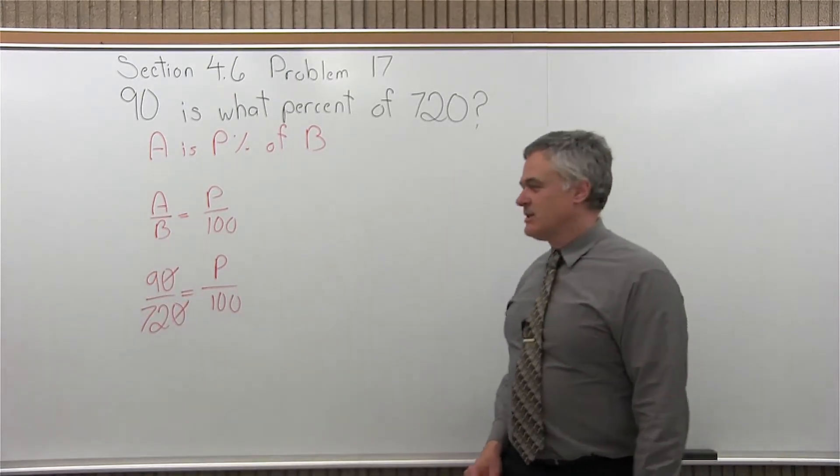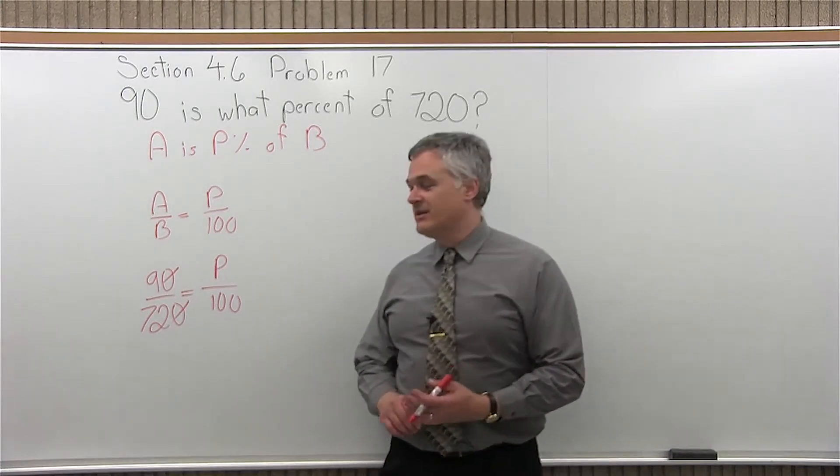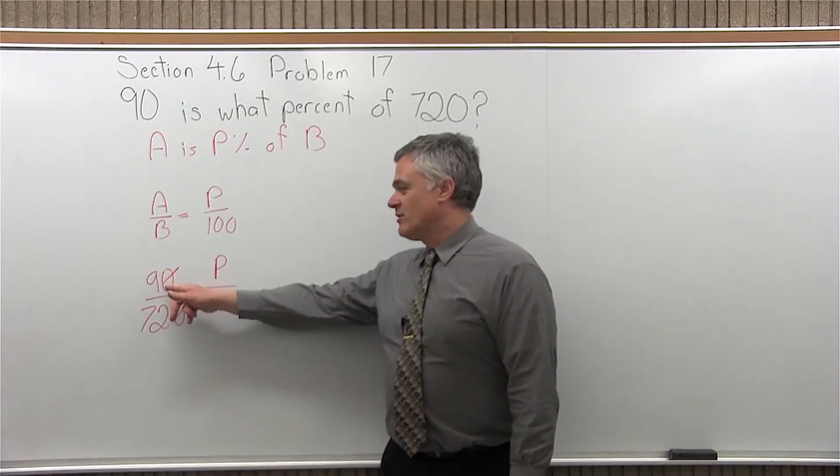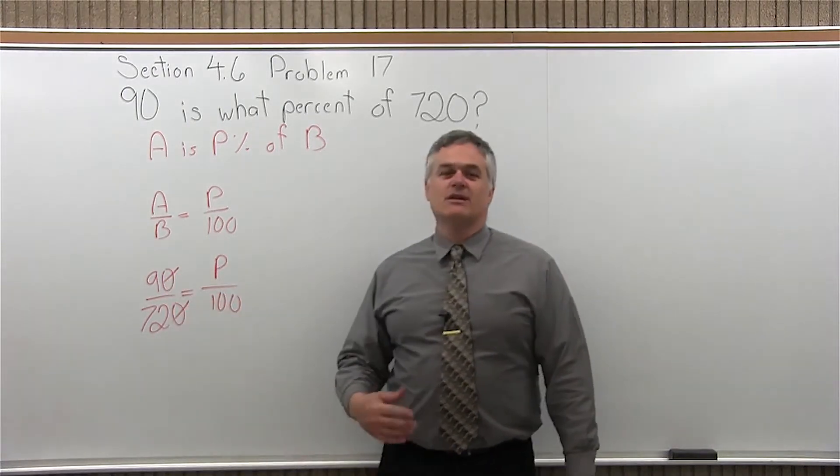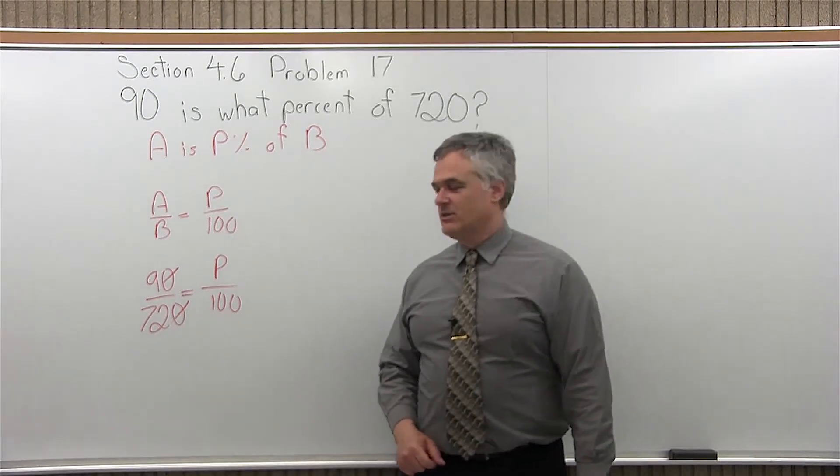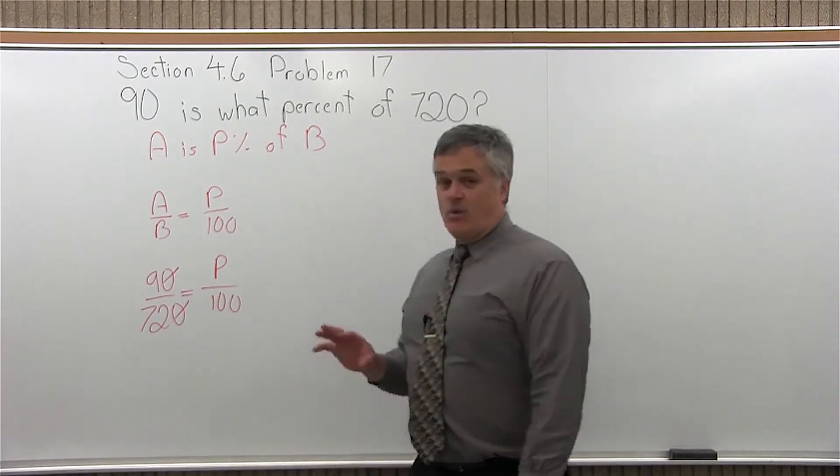You can at least chop off a zero. Now, I say chop off a zero. That's not very mathematical. Technically, I'm dividing 10 into the numerator evenly to get 9. Divide 10 into the denominator evenly to get 72. And that will work.